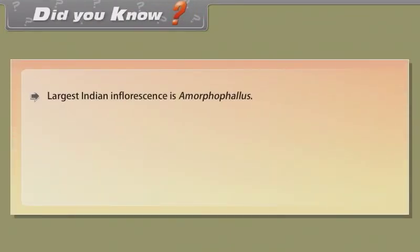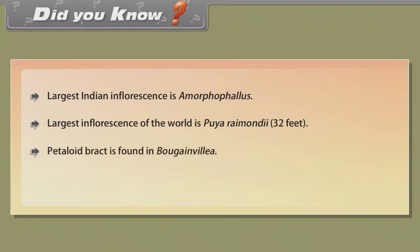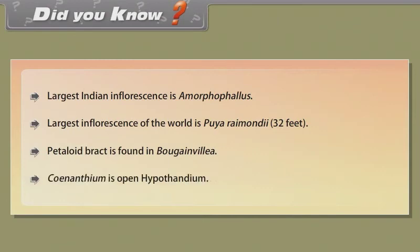Did you know? The largest Indian inflorescence is Amorphophallus. The largest inflorescence in the world is Puya raimondii at 32 feet. Petaloid bracts are found in Bougainvillea. Synanthium is an open hypanthodium.